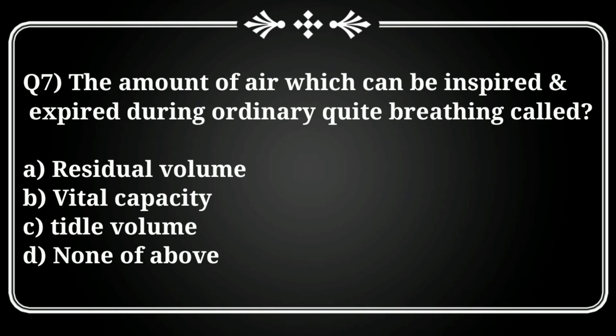Question 7: The amount of air which can be inspired and expired during ordinary quiet breathing is called? Options: A) Residual volume, B) Vital capacity, C) Tidal volume, D) None of the above. The correct answer is option C, Tidal volume. Its normal value is 0.5 liters or 500 ml.